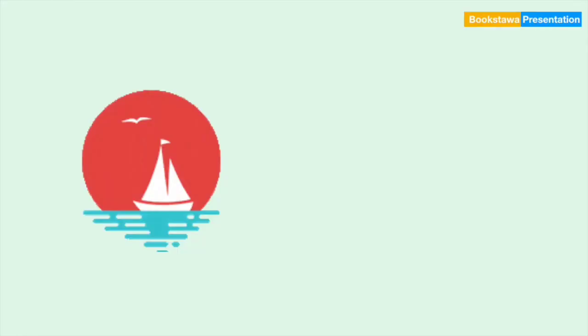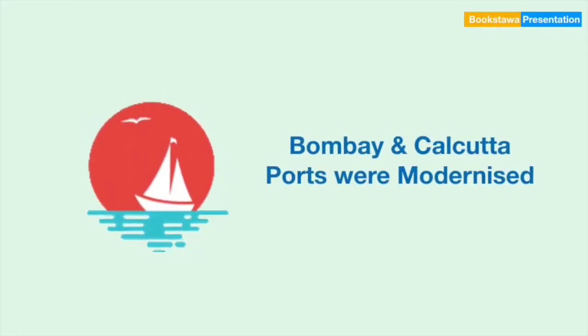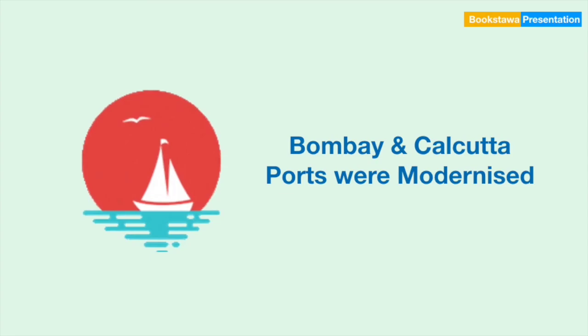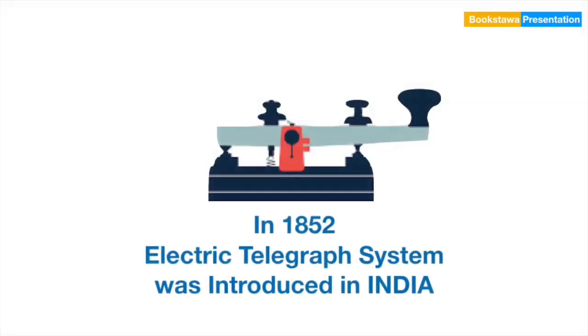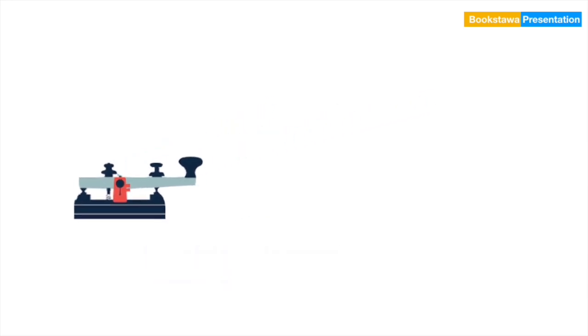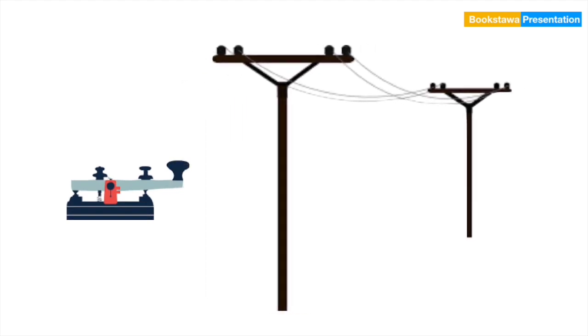Apart from this, Bombay and Calcutta ports were also equipped with modern technology. Also, in 1852, the electric telegraph system was also introduced in India. This was a very important development, because with the help of telegraph, you can send messages from one corner of the country to the other immediately. At that time, there was no telephone system.